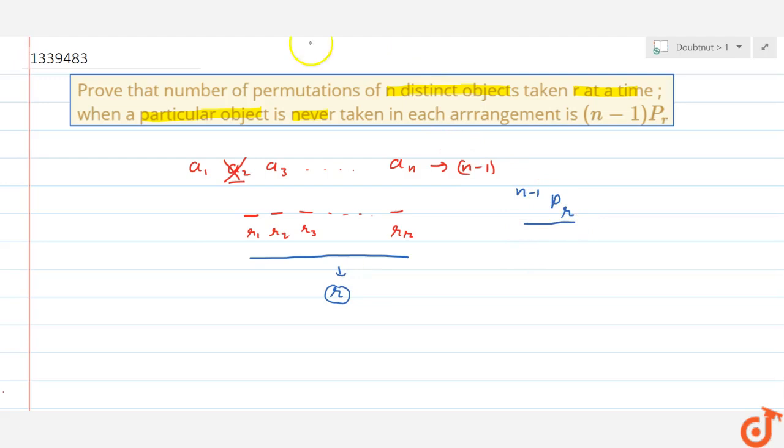Now in the next video, if we take n different objects but if these objects are the same objects, n same objects or p same objects, then what will happen to our permutation?